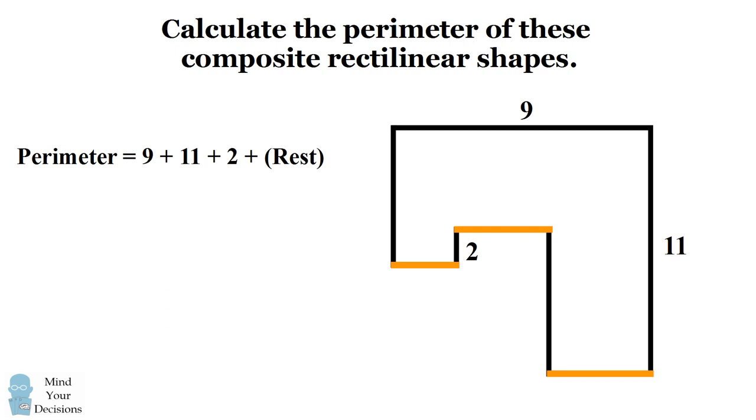So these orange edges will all add up to 9. The vertical edges are a little bit trickier because they overlap. So what we'll do is try and count it without overlapping. We have one vertical edge, and now we'll continue this vertical edge without overlapping. Together, these two vertical edges will have a total length equal to 11.